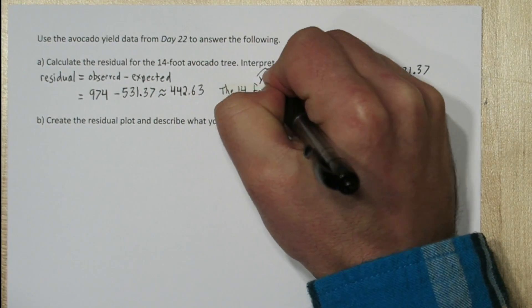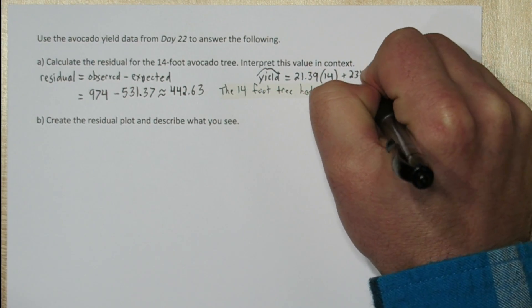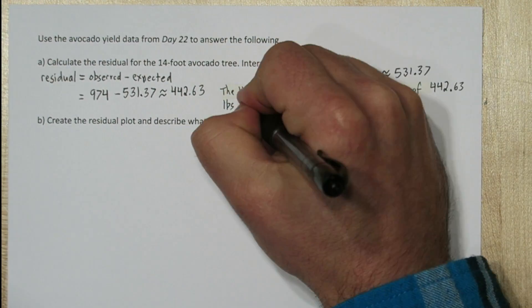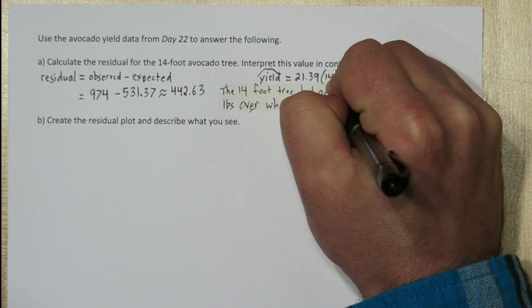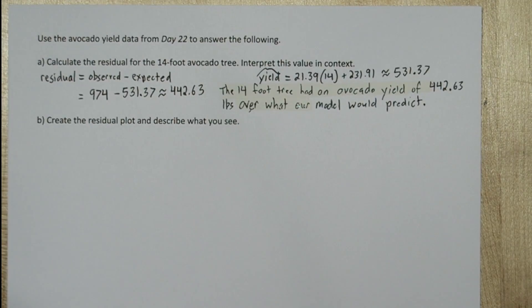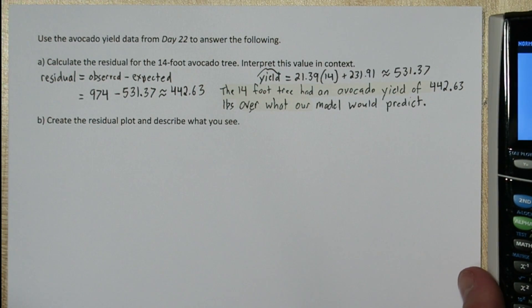Now a positive residual means this tree had a higher yield than we'd expect. So we can say the 14-foot tree had an avocado yield of 442.63 pounds over what our model would predict.